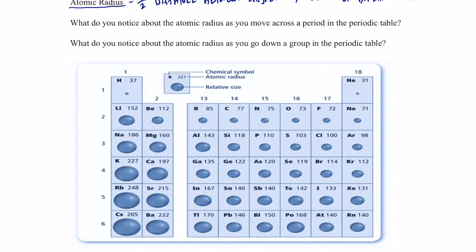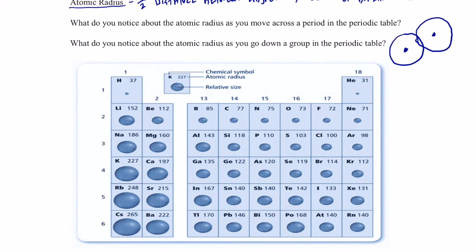Here's the nucleus of a hydrogen atom with its electrons buzzing around in a spherical shape, and here is another hydrogen atom that it's bonded to with its electrons buzzing around as well. If I take the distance between those two nuclei and take half of that distance, that would be the atomic radius of a hydrogen atom.